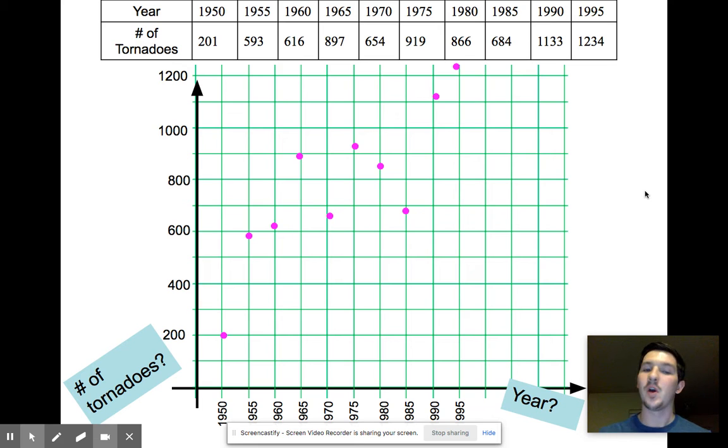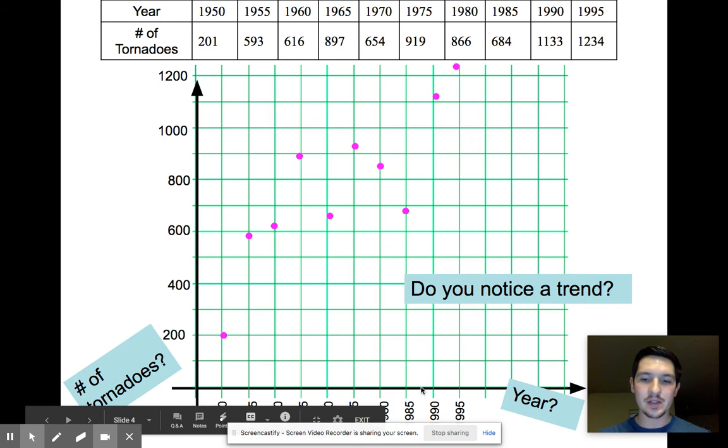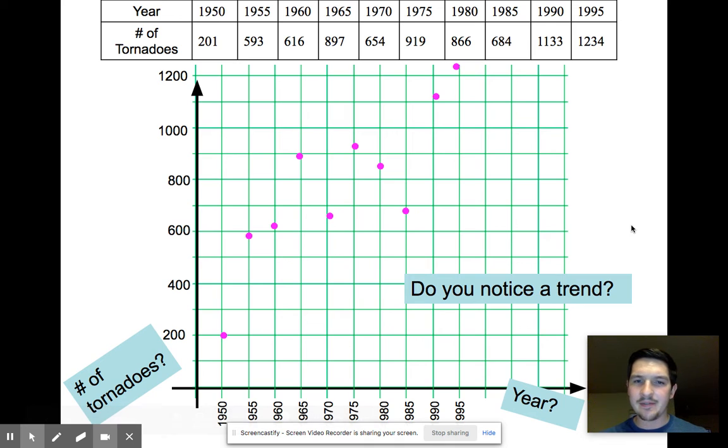The first thing I want you to ask yourself, do we see a correlation, right? Do you see a trend? And the answer is yes, right? As the years get farther on from 1950 to 1995, we can see that the farther years go, the more tornadoes that have occurred throughout those years.